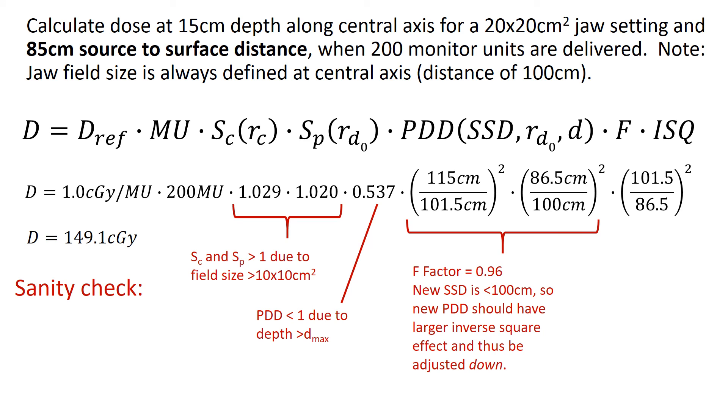If we look at our f-factor and multiply all that out, we find that it's slightly less than 1. And then we can know that that makes sense since the new SSD is less than 100 cm. We've gotten a little bit closer to the source. So the new PDD should have a little bit more of an inverse square effect than it would at 100 SSD. So thus we would expect this f-factor to adjust that PDD down a little bit.